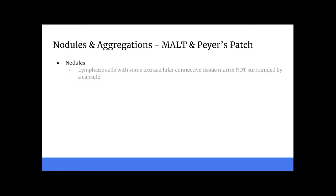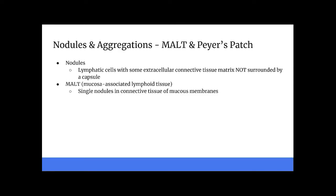Lymphatic nodules are egg-shaped masses of lymphatic tissue that are not surrounded by a capsule — that's really important, that they're not surrounded by a capsule. They are scattered within the mucosal membrane lining the gastrointestinal, urinary, and reproductive tracts, as well as the respiratory airways. Lymphatic nodules in these areas are called mucosal-associated lymphatic tissue, or MALT. These are the single nodules in that connective tissue of mucosal membranes.